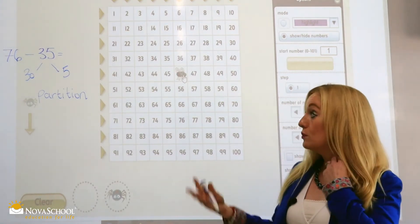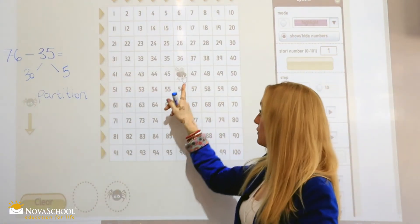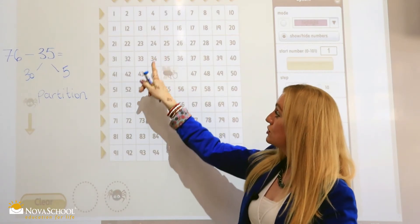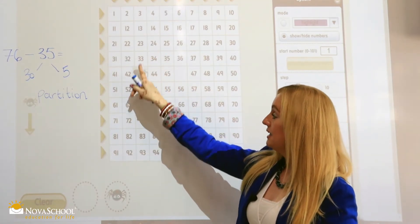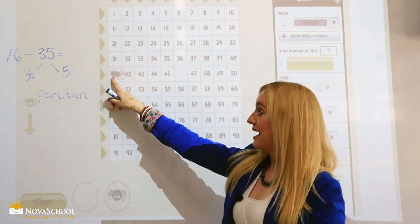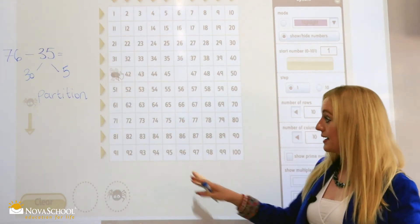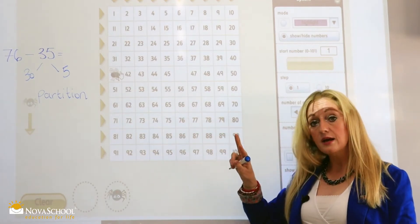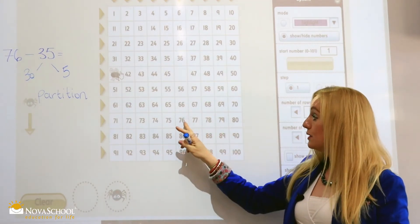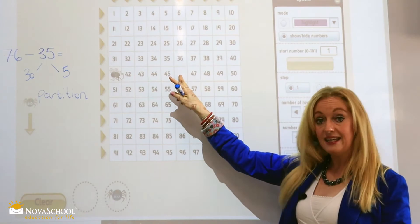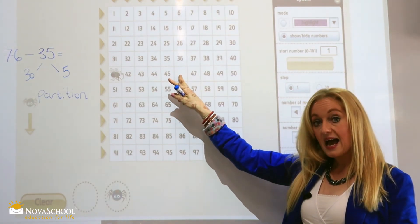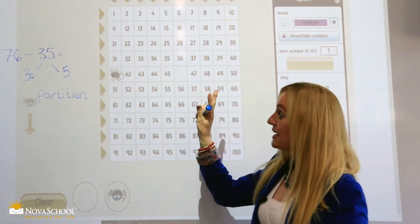so what do we do now? We subtract the 5. So we go backwards. 1, 2, 3, 4, 5. So in this method we have taken the number, we've placed the fly on the number square. We've subtracted 30, okay? And then we've taken away the 5.